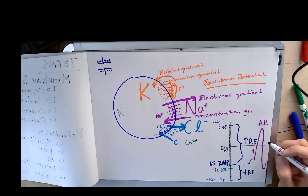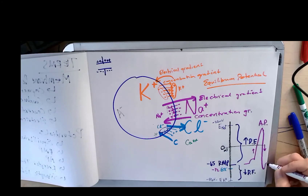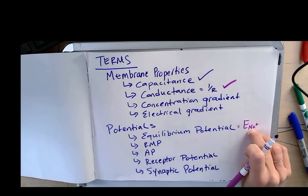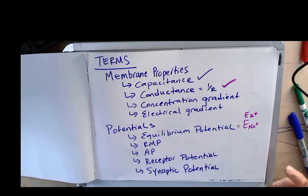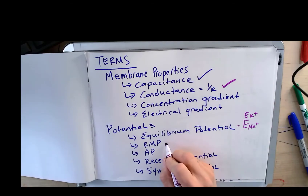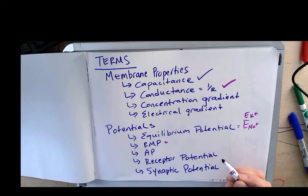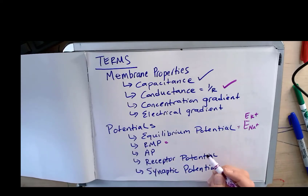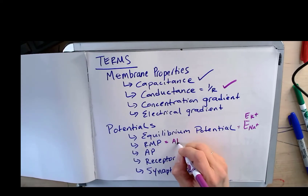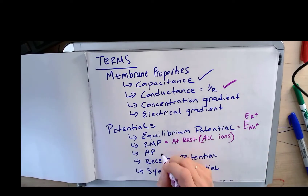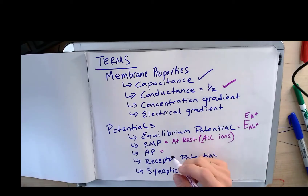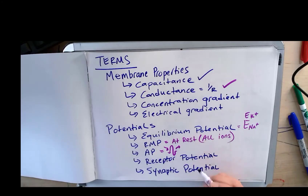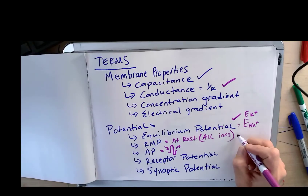The action potential has a depolarizing phase, a reversal at the top, a repolarizing phase, and then a hyperpolarizing phase when it overshoots. To summarize: equilibrium potential is the potential as if only one ion were in the system. Resting membrane potential is what the membrane potential is at rest when you consider all the ions. The action potential is the 100-millivolt change driven by an inward sodium current on the depolarizing phase and an outward potassium current on the repolarizing and hyperpolarizing phase.